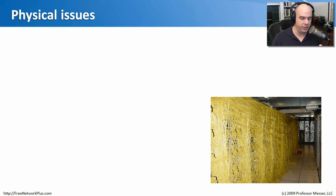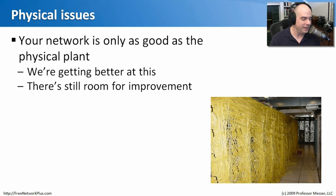Let's start talking about physical issues. Boy, here's a picture of what must be a very challenging physical plant. It's just a wall of wire. You don't even know where something starts and where something ends. Not really a situation you want to find yourself in. The idea, of course, is that the network is only going to be as good as the physical plant on which it runs. And so we need to make sure that the cabling infrastructure, that the fiber infrastructure that we have is up to spec for what we're doing on this network.